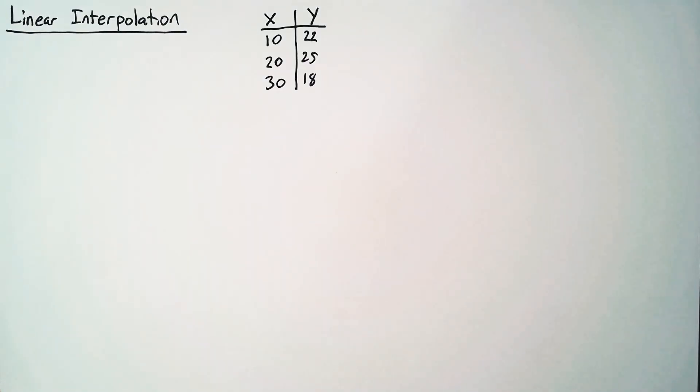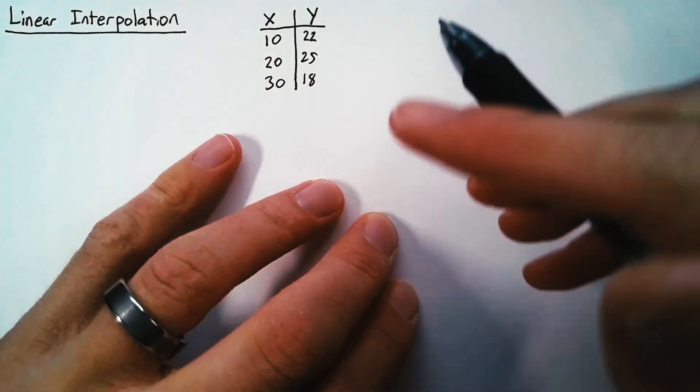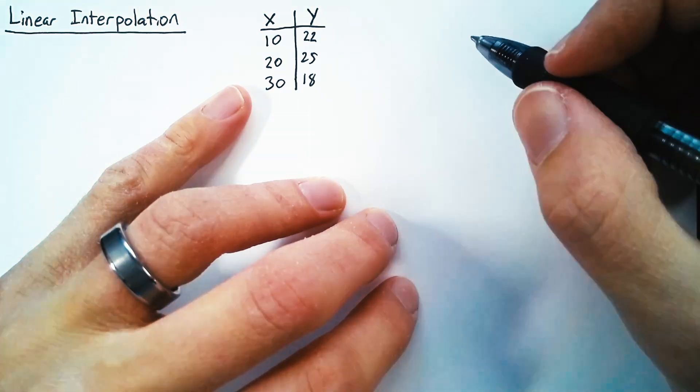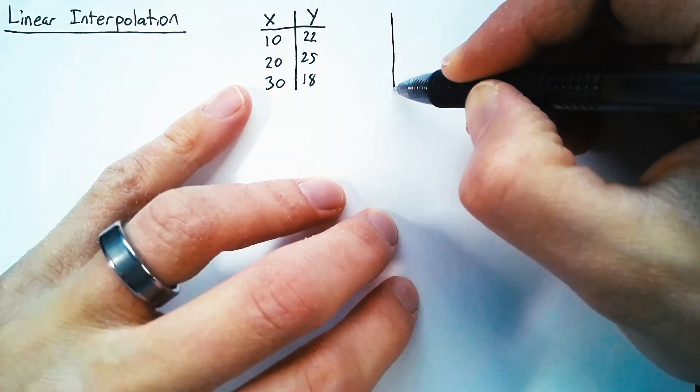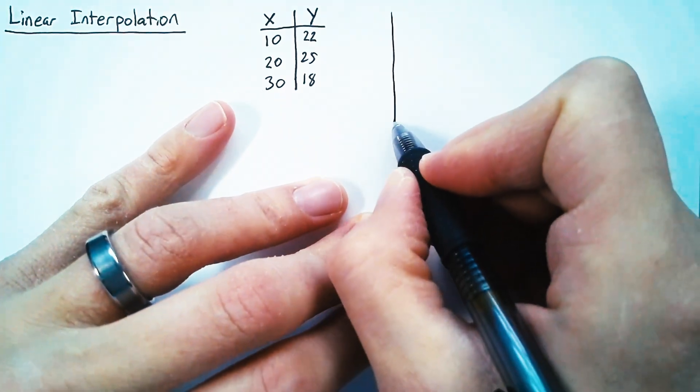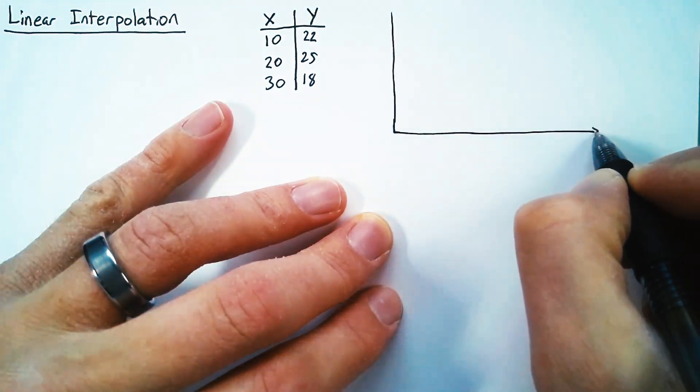And we are allowing error into our calculations here, but we can systematically come up with a value. So let's graph this out and just try to draw a picture of what we're going to be doing.